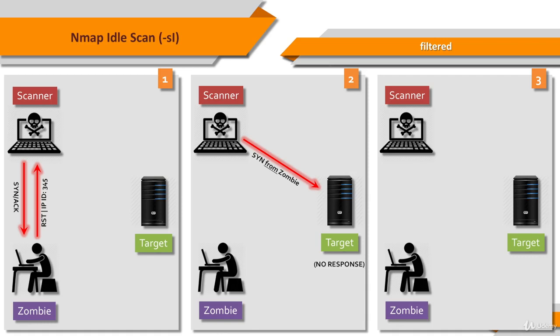The third step is to probe the zombie's IPID again. The attacker sends a SYN/ACK to the zombie again. The RST packet of the zombie has an IPID which is increased by only 1 since the first step, so the port is not open. From the attacker's point of view, the filtered port is indistinguishable from a closed port. In both cases, the IPID is increased by only 1.